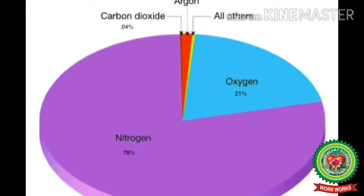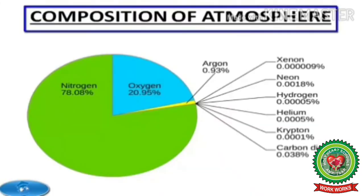The most abundant gas in the air is nitrogen, forming about 78 percent of the volume of the pure dry air. Oxygen makes up another 21 percent. These two gases together constitute about 99 percent of the volume of the air. The remaining volume is accounted for by a number of gases including argon, carbon dioxide, helium, hydrogen, and ozone. Among these, argon is the most abundant, forming about 0.9 percent of the volume of air.